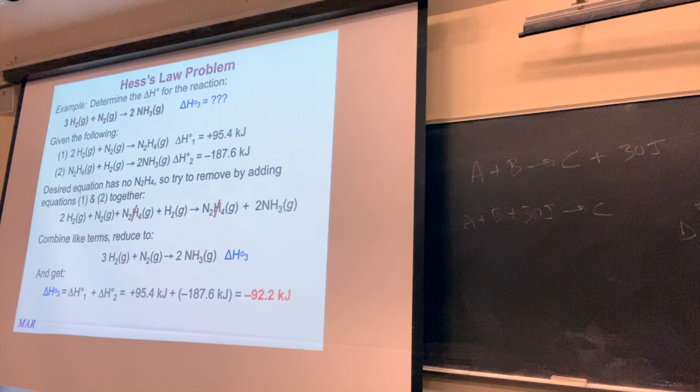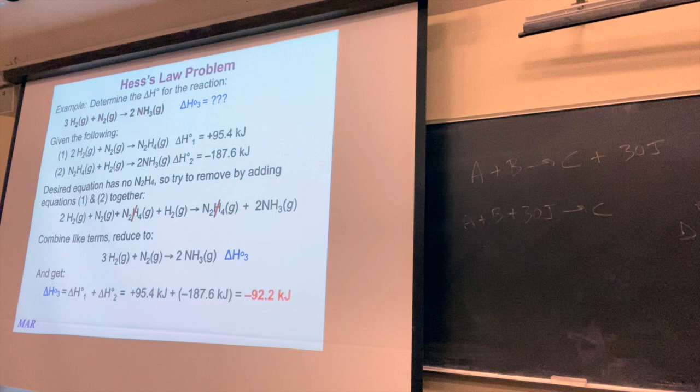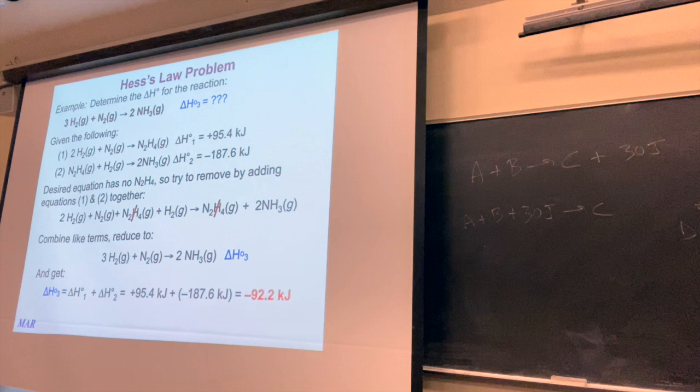Hess's law can be really, really useful. A student asked: do one reaction have to be endo and one exo, or can they both be endo? They can both be endo, they can both be exo, or you can have one of each — it doesn't matter. The key is that if you can combine known equations to give you the unknown equation, you add up those individual energies to find the overall energy. Sometimes it will be endo and sometimes exo, but at least you can figure it out.